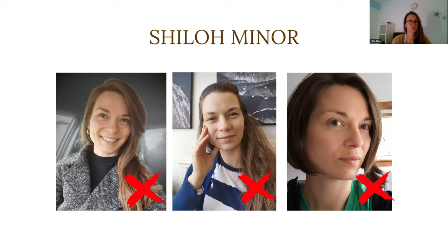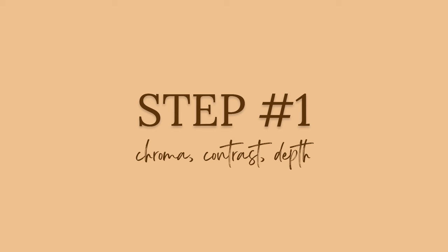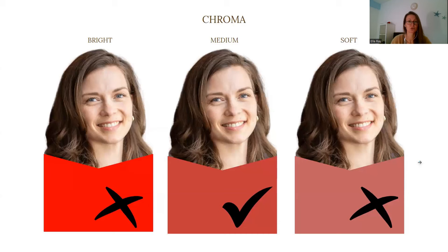To find her true color type, I go through a simple three-step color analysis method that I've developed based on physics, quantum physics, and Asian principles of harmony and healing. The first step in the analysis is to look at the chroma — is she bright, medium, or soft?